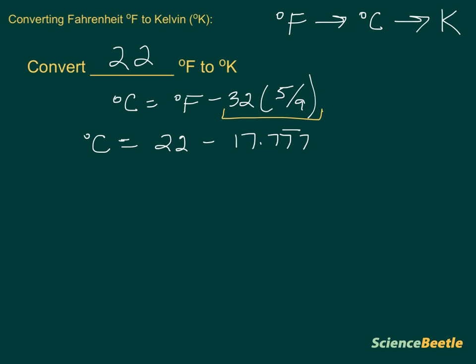So, now if I take the 22 and I subtract 17.77, my degree Celsius is going to be equal to the following number. And so, that answer winds up being 4.223.